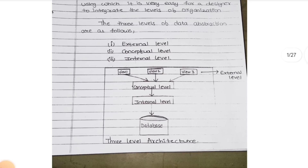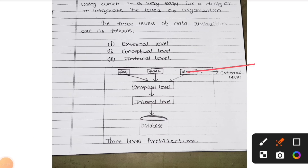In the diagram, at the bottom you have the database where everybody's data is stored. Above that is the internal level, then the conceptual level, and at the top is the external level. We are the viewers - if you are searching anything in Chrome, you are only able to see it at the external level. Whatever views you are having - view 1, view 2, view 3 - we are not able to see all the data, just the data at the external level.